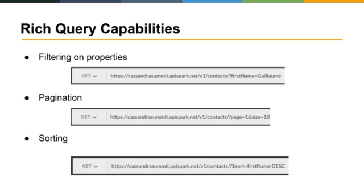We also wanted very rich query capabilities — not always the strongest part of a NoSQL database. This means the ability to filter on one or many properties, paginate, sort, and potentially do full-text indexing.